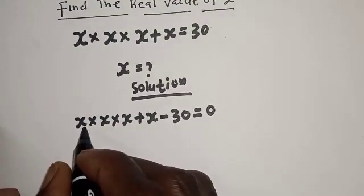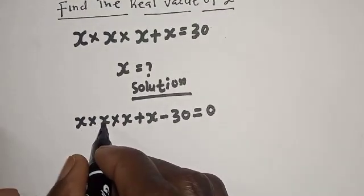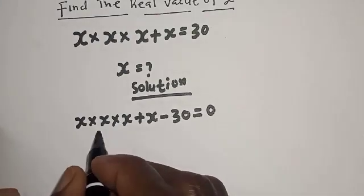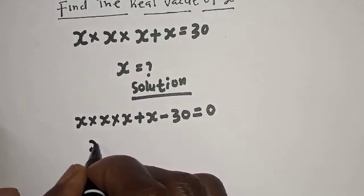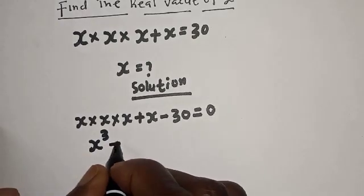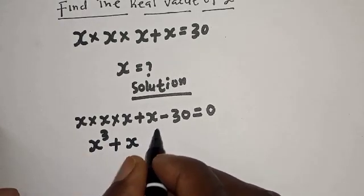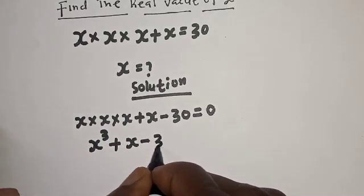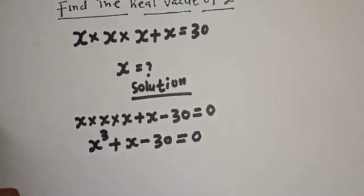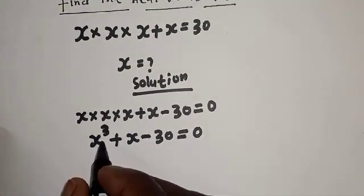s multiplied by s multiplied by s is s raised to the power 3, so we have s³ plus s minus 30 is equal to zero.